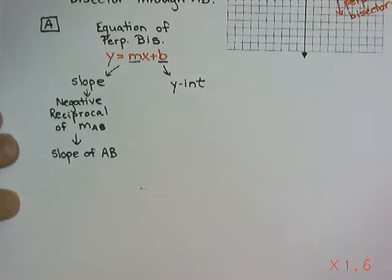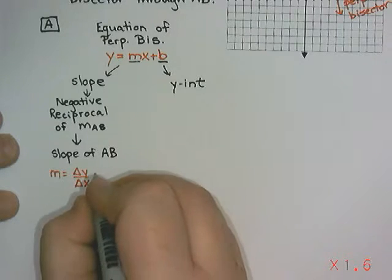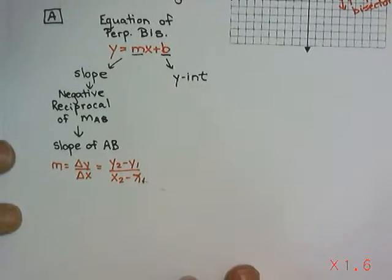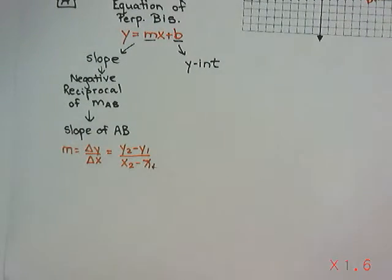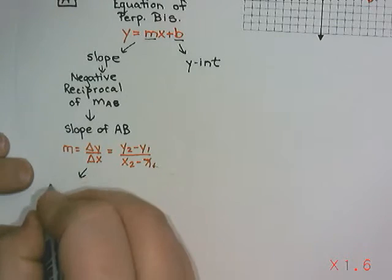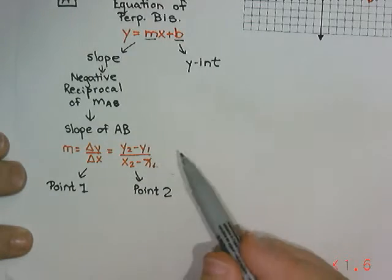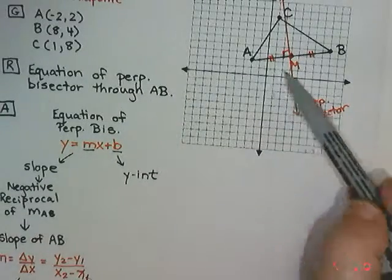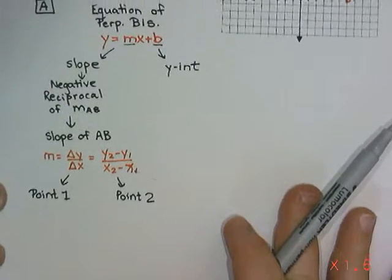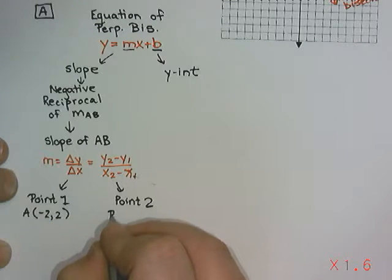If I'm going to do the negative reciprocal of the slope of AB, I need to find the slope of AB first. To find slope, we can use delta y over delta x, or y2 minus y1 over x2 minus x1 — whichever you prefer. Either way, we need two points. Since we're finding the slope of AB, the two points I'm going to need are point A, which is negative 2 and 2, and point B, which is 8 and 4. That takes care of the slope side — we have a plan, a formula, and we're going to take the negative reciprocal.